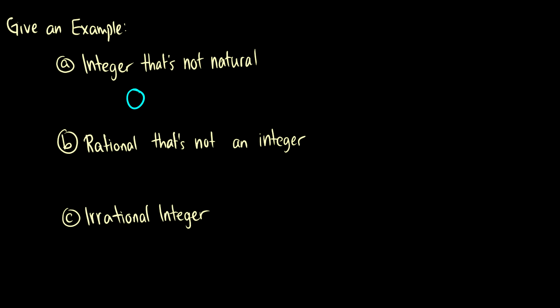So we could give the number 0. That's an integer that's not natural. Or negative 173. That's also an integer that's not natural. So really, you could give any integer less than or equal to 0.